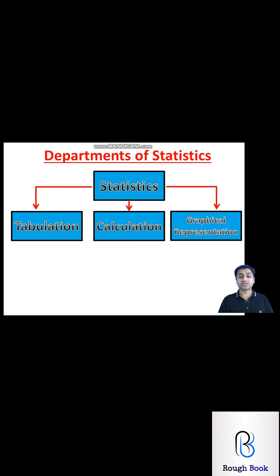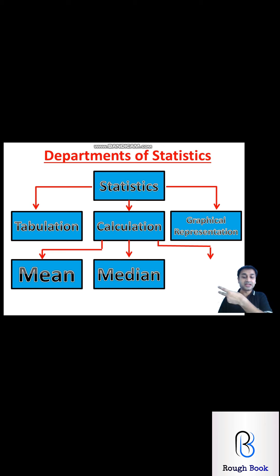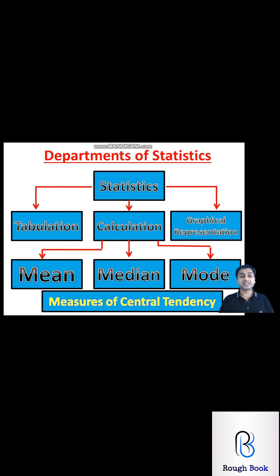Let us understand what measures of central tendency are. The first test is mean, the second is median, and the third is mode. All three are very important tests because they give us the trend of the data we are trying to analyze. Together they are called measures of central tendency. There are many more statistical tests — for example, quartiles, deciles, percentiles, ANOVA, ANCOVA — but those are difficult ones and right now we don't need to get into them.